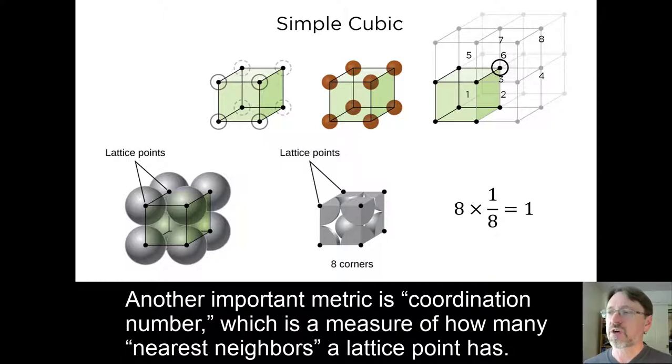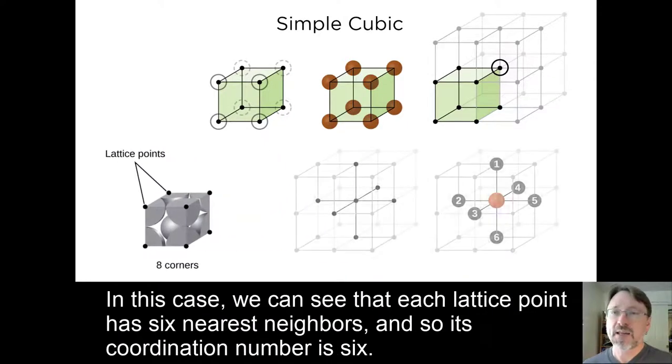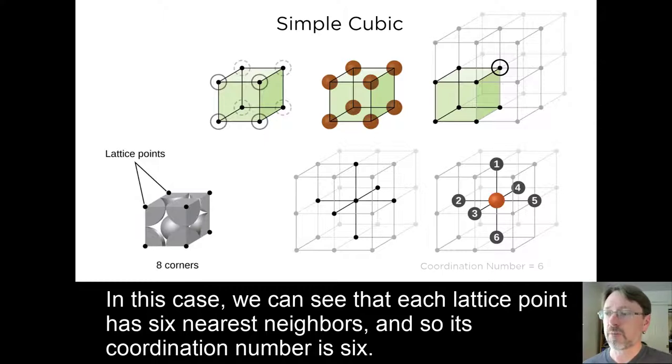Another important metric is coordination number, which is a measure of how many nearest neighbors a lattice point has. In this case, we can see that each lattice point has six nearest neighbors, and so its coordination number is six.